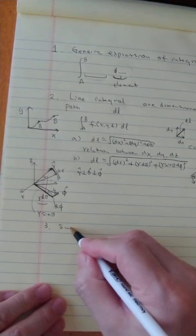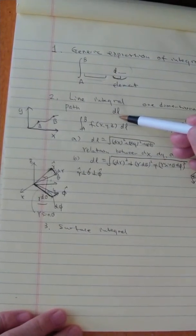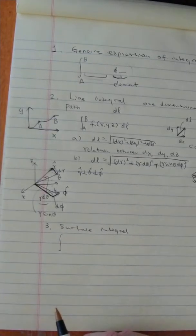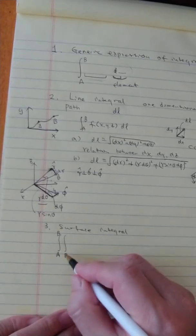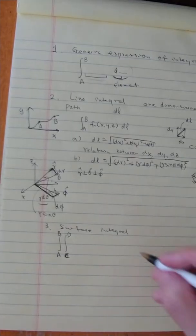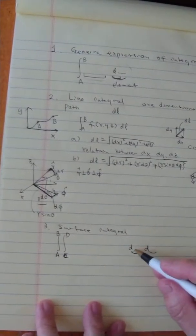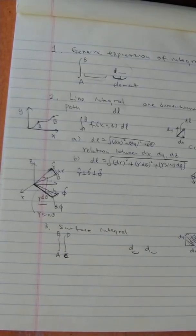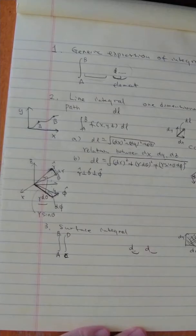Let's move on to the surface integral. The surface integral, in many ways, is a little more complicated. The line element dl was just one element, but now you multiply two elements together. The surface integral has two limits — suppose a to b and c to d — and two elements: d(something) × d(something). If it's dx·dy, then dx and dy together give you an area — a surface area — and that's where you do the integration.